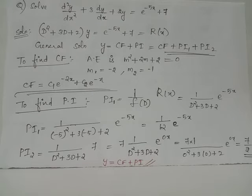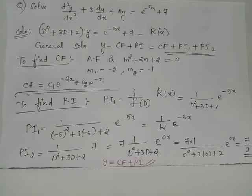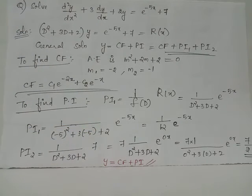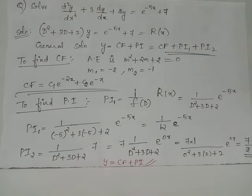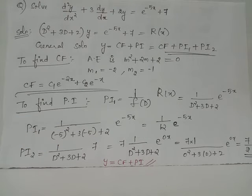PI1 = [1/f(D)]·e^(-5x), where f(D) = D² + 3D + 2, and a = -5 (the coefficient of x in the exponent). To compute PI when RHS is e^(ax), replace D by a. Here a = -5, so the denominator becomes (-5)² + 3(-5) + 2 = 25 - 15 + 2 = 12. Since this is non-zero, PI1 = e^(-5x)/12.